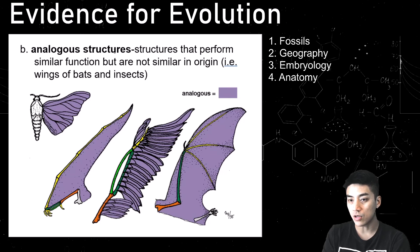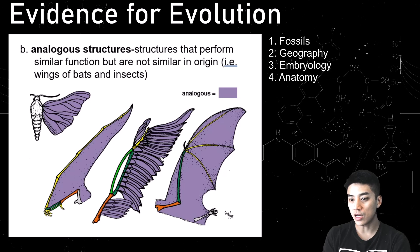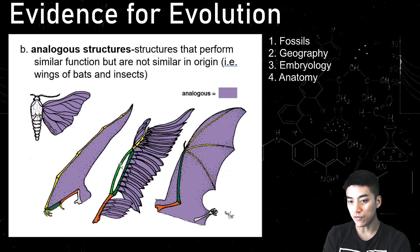Analogous structures are structures that perform similar functions but are not similar in origin. For example, a moth wing versus a bat wing or a bird wing — all designed to fly, so those are analogous structures. But when you look at the actual makeup and bone structure, you can see they're all slightly different from one another.